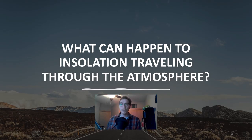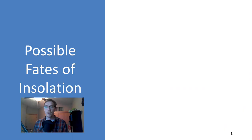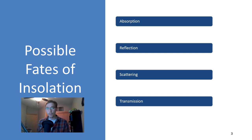So what can happen to insolation traveling through the atmosphere? A number of things. It can be absorbed, reflected, scattered, or transmitted.